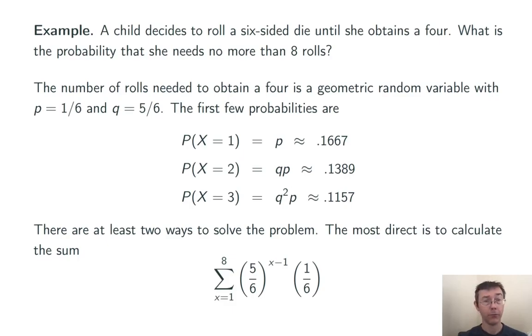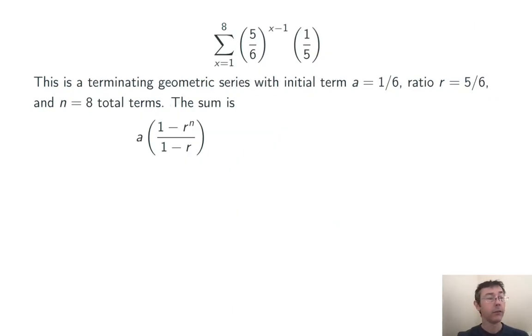So, sum from X equals 1 to 8, 5/6 to the X minus 1 times 1/6. This is one that we can do by hand. It's a terminating geometric series. The initial term A is 1/6, and the ratio is R, 5/6. There are N equals 8 total terms. And so, the formula for the sum of this terminating geometric series, A times 1 minus R to the N over 1 minus R, comes out to be this. It simplifies out to 0.7674.